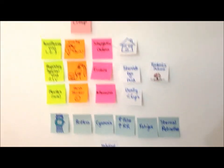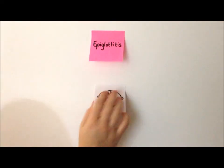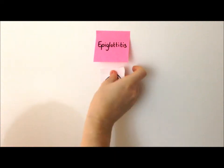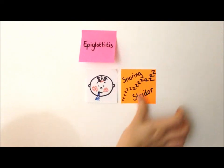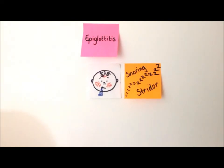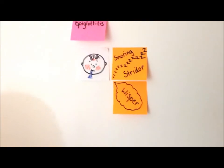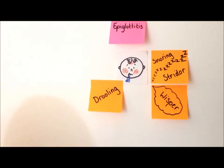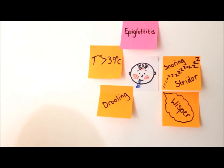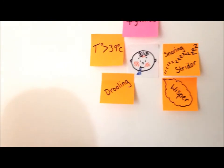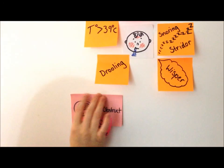Moving on to epiglottitis. This is an example of a child with epiglottitis. Symptoms include snoring stridor, which is constant, a whispering voice, drooling, and a high temperature. Therefore, if any of these signs are present, you must not examine the throat.